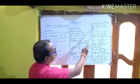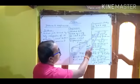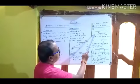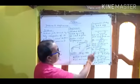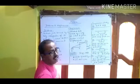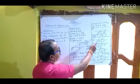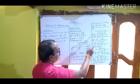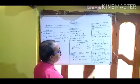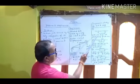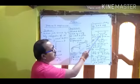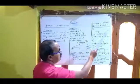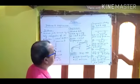In the first case, the body starts from O and reaches A. Its distance is OA and displacement is also OA, because O is the initial position and A is the final position. So distance equals displacement, and both are positive because the body moves to the right from the origin.